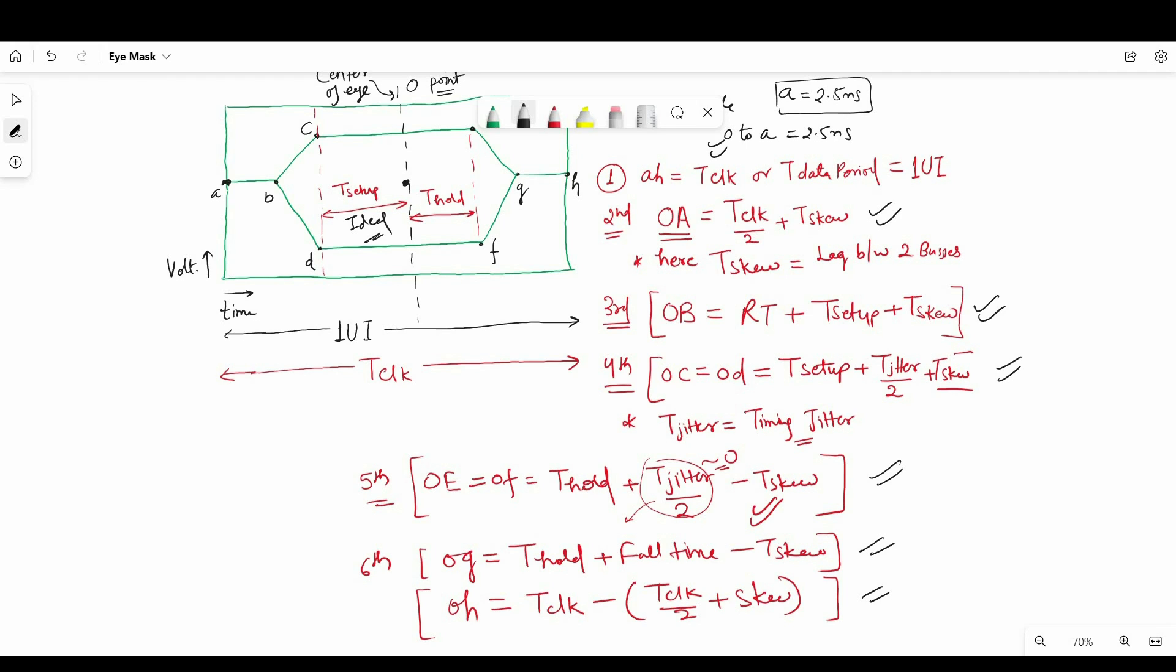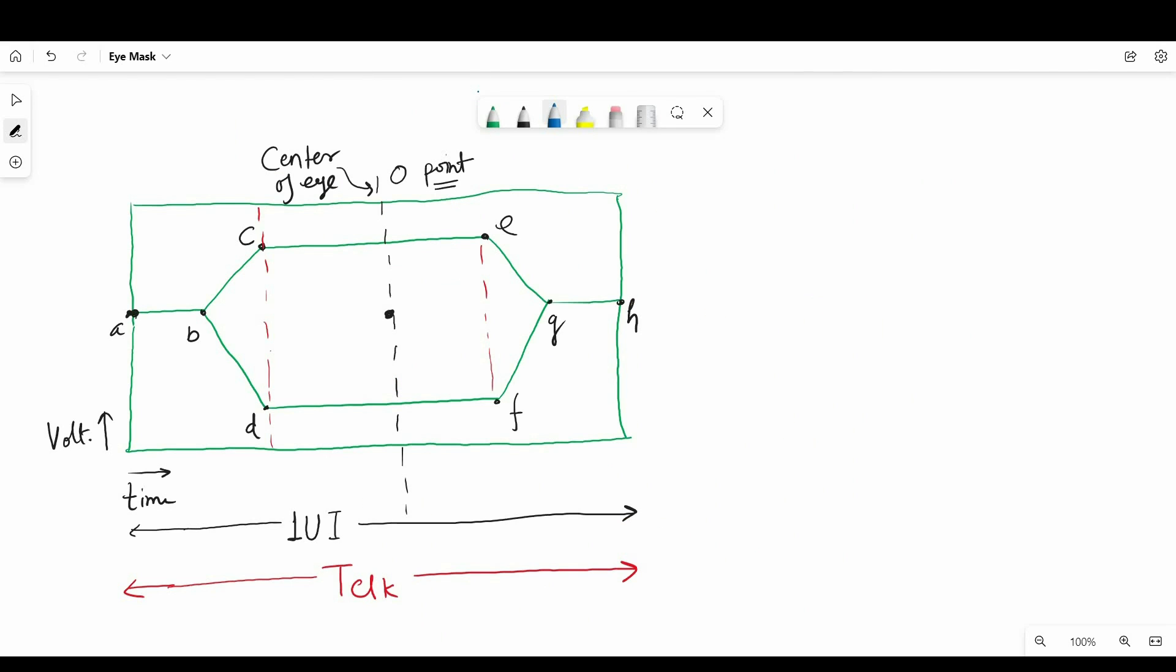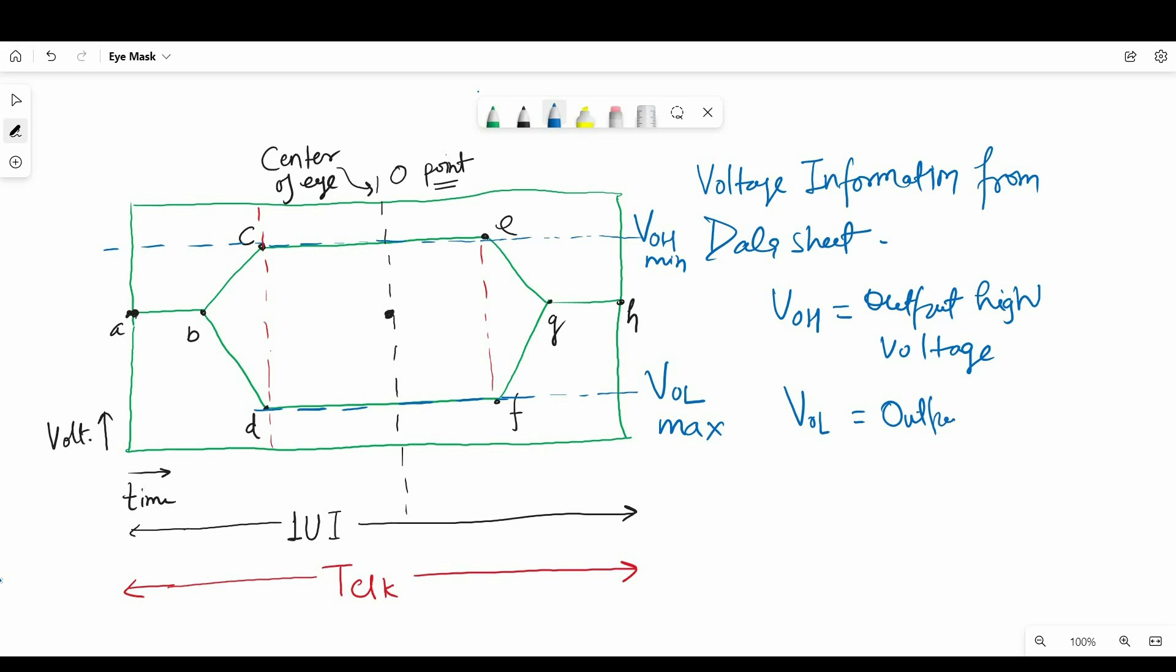Now before moving to the demonstration part here I will conclude we need to get these values to create an eye mask from manufacturer datasheet or other documents. And first one is Tclock, Tskew, rise time and fall time, Tjitter and setup and hold time. If we have these six values we can be able to create eye mask. Apart from these timing information we also need some voltage information from manufacturer's datasheet and that is output high voltage and output low voltage. We also represent these voltages with VOHmin and VOLmax.